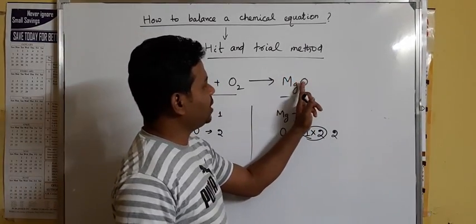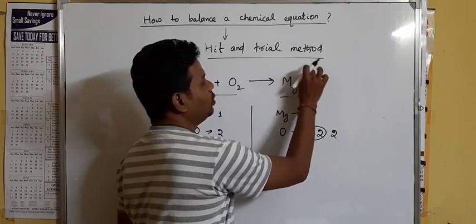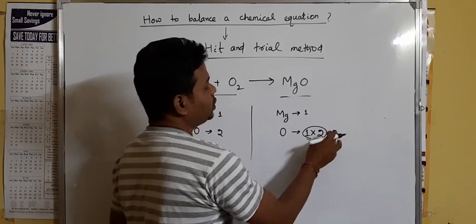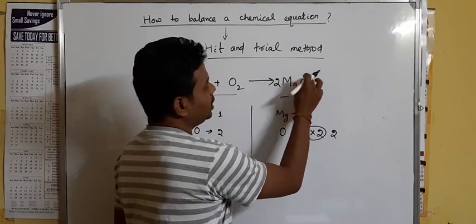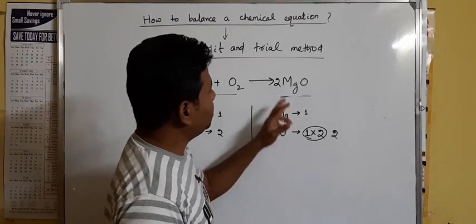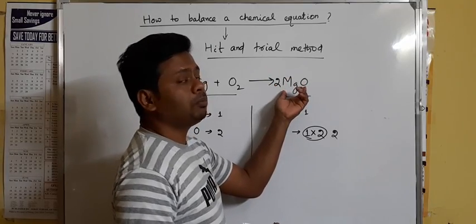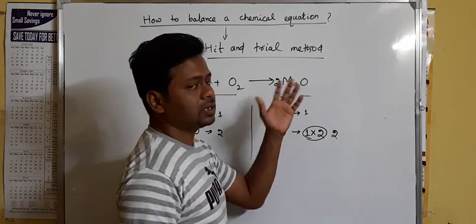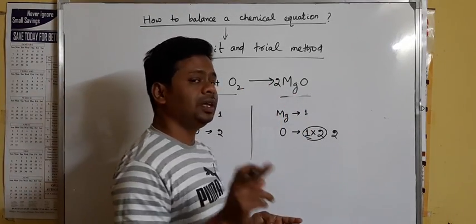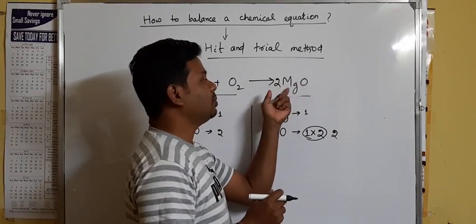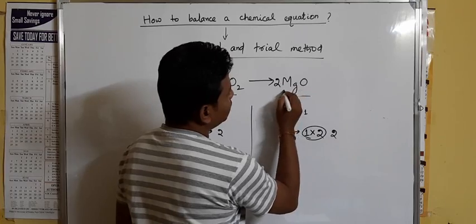In MgO, magnesium and oxygen are present in the same compound. So if you multiply two, you have to write it on the left-hand side of the compound. Remember, students: whenever you multiply any number, you must write it to the left side of the whole compound or element. If you want to make equal numbers of atoms, you multiply the number to the left side of the compound or element. So here I have to multiply two on the left-hand side of MgO.